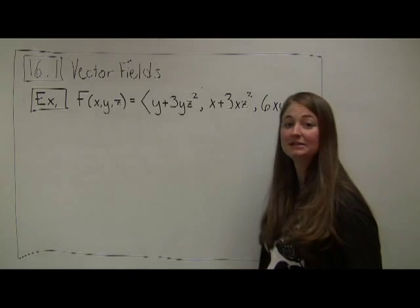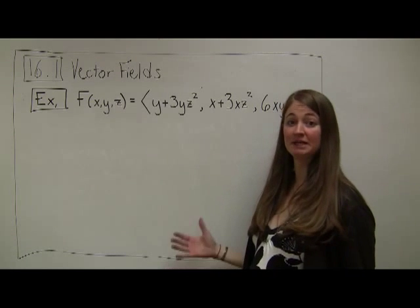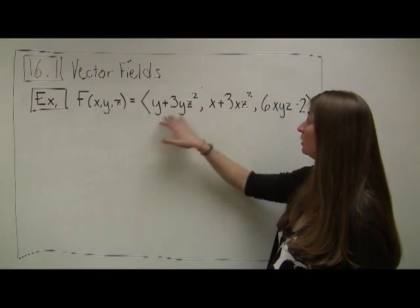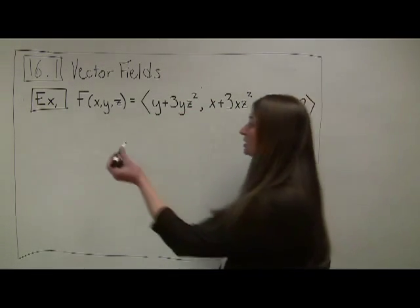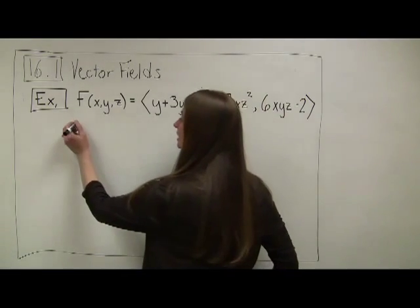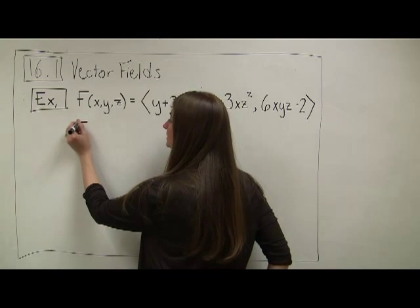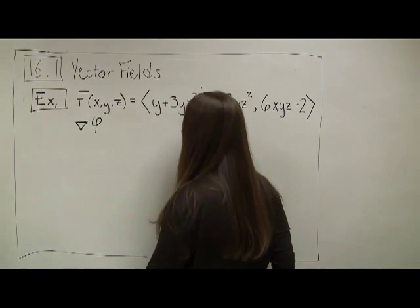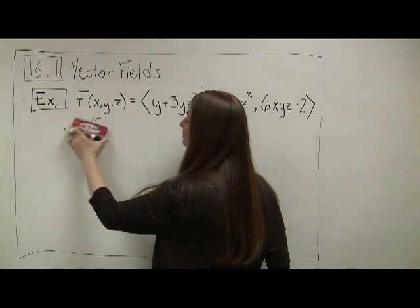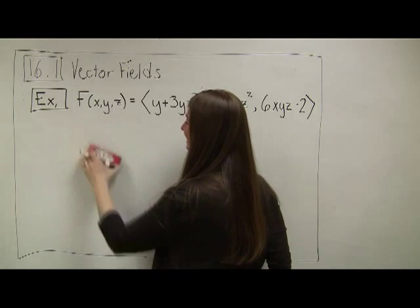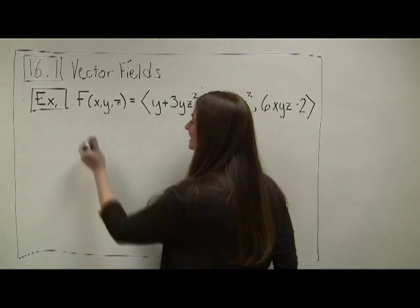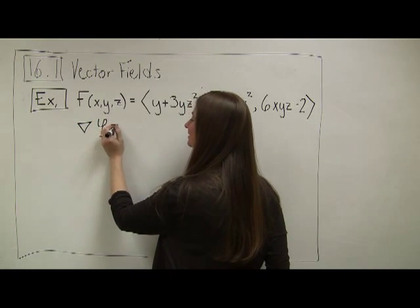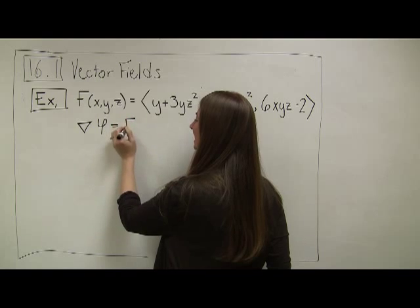Our job is to find the potential function — working backwards, where did this come from? Recall that our potential function phi has the property that the gradient of phi is equal to this function f.